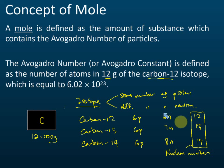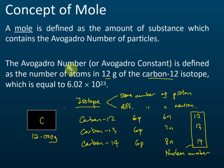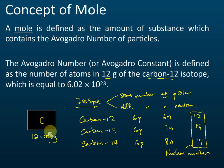Now you know why we call it carbon-12 — because the nucleon number is 12. Carbon-13 has a nucleon number of 13, and carbon-14 has a nucleon number of 14. To determine the Avogadro number, we use only carbon-12, not carbon-13 or carbon-14.